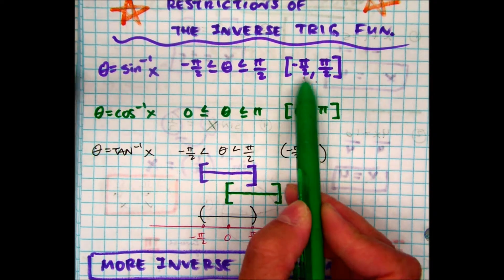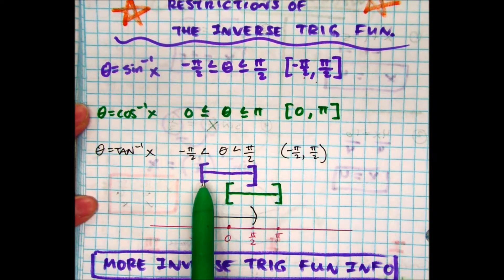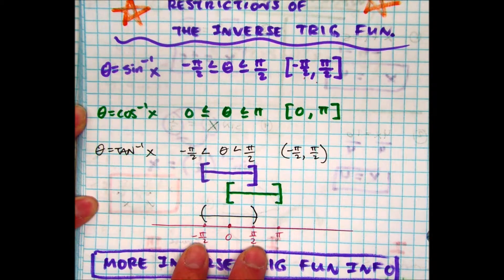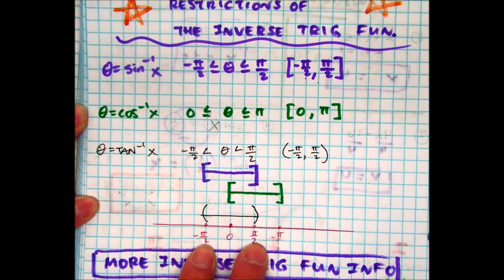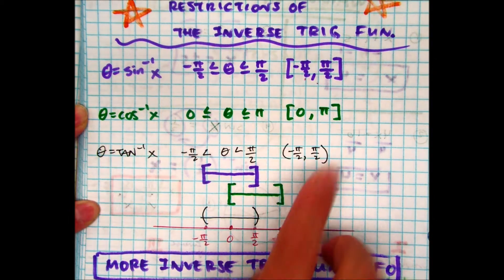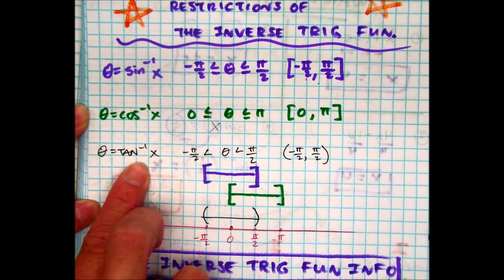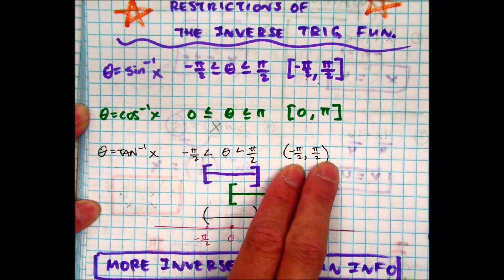A visual of this is interval notation. I have a bracket and a bracket from between negative pi over two and pi over two. For the inverse of cosine, that's between zero and pi. And the inverse of tangent is negative pi over two and pi over two.